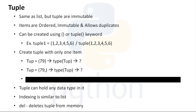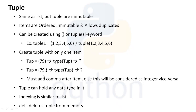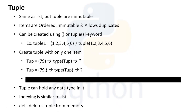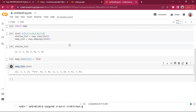How can we create a tuple? We need to use parentheses instead of square brackets which we use for lists. Or else we can use the tuple() keyword. Inside the tuple method we need to pass an iterable — it may be a list or it may be a set, anything. Let's try creating a tuple now.